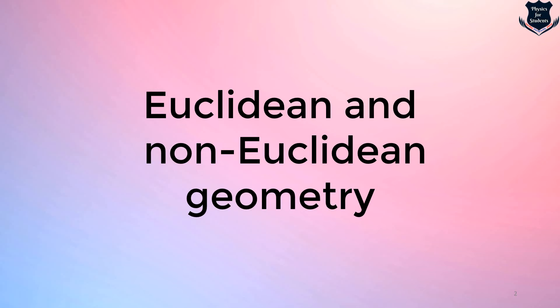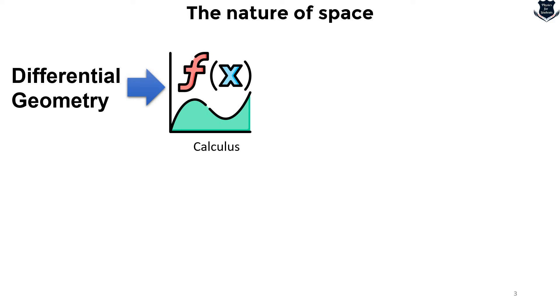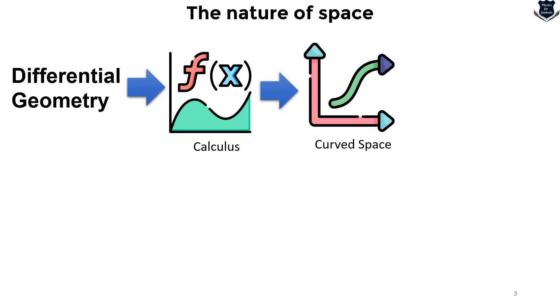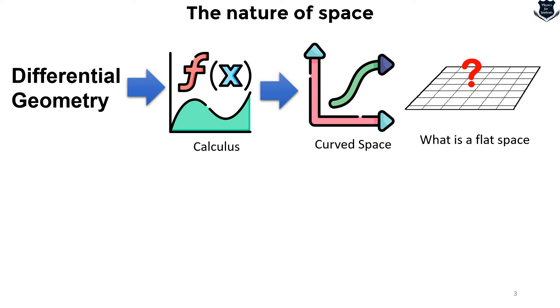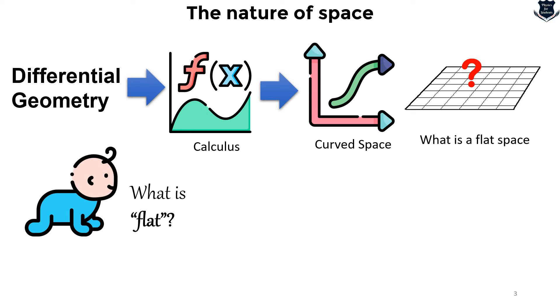Differential geometry is the application of calculus to the geometry of a space that is obviously curved. But to understand curved space we should first understand what is called a flat space. We generally inhabit a natural world pervaded by curved objects, and if a child asks the meaning of 'flat,' we are most likely to answer in terms of the absence of curvature.